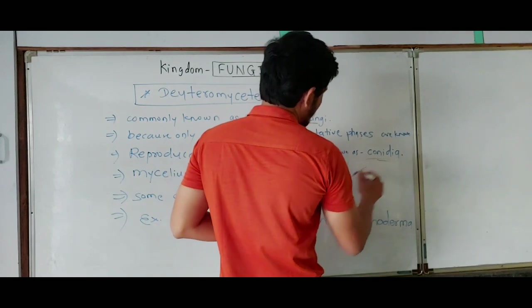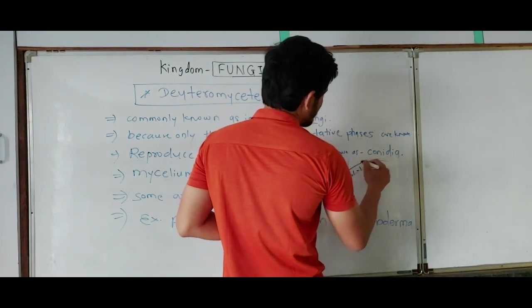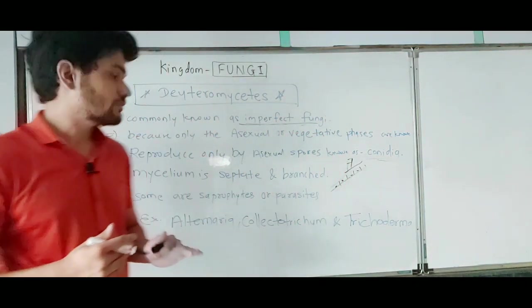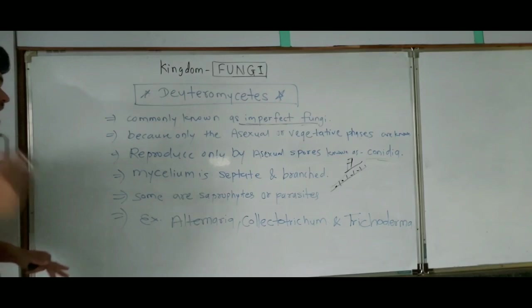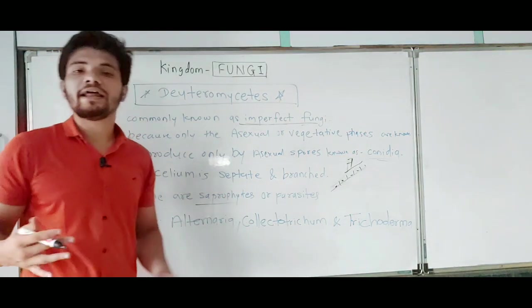have septate mycelium—cross walls are present—and branched structure like this, so the structure will look like this. Some are saprophytes, which means they grow on dead and decaying material.